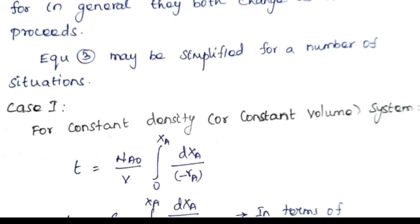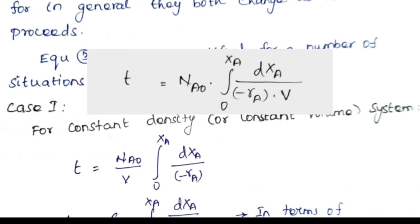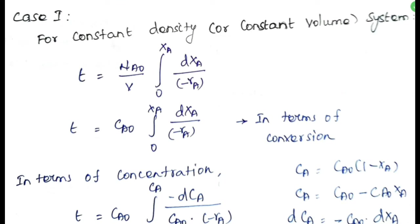Case 1 is for a constant density or constant volume system. The performance equation is t = NA0 · ∫₀^XA dXA / [(−rA)·V]. For a constant volume system, V is constant and can be taken outside the integral sign, giving: t = (NA0/V) · ∫₀^XA dXA / (−rA).